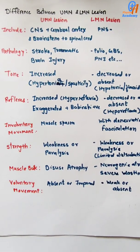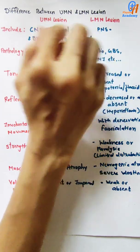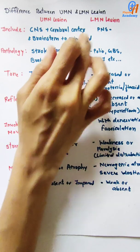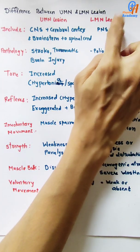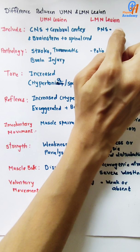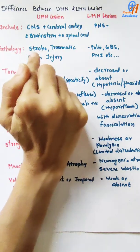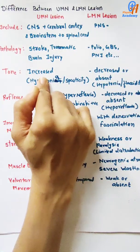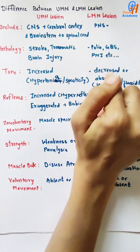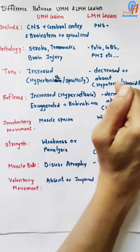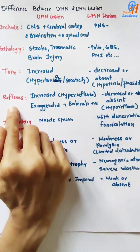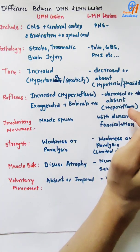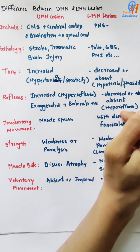To revise: the upper motor neuron includes CNS, cerebral cortex, and brainstem down to the spinal cord. The lower motor neuron includes PNS and the connecting part to the CNS. UMN lesion examples: stroke, traumatic brain injury. LMN lesion examples: polio, GBS, peripheral nerve injury. In UMN lesion, tone is increased — hypertonia or spasticity. In LMN lesion, tone is decreased or absent — hypotonia or flaccidity. In UMN lesion, reflexes are exaggerated and Babinski sign is positive. In LMN lesion, reflexes are decreased or absent — hyporeflexia.